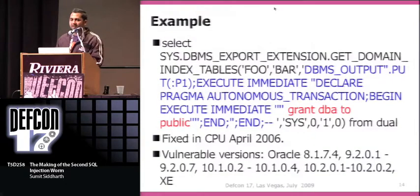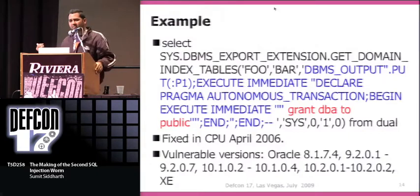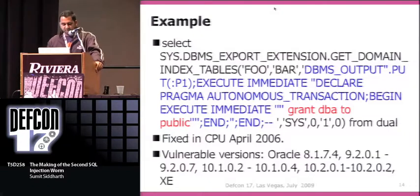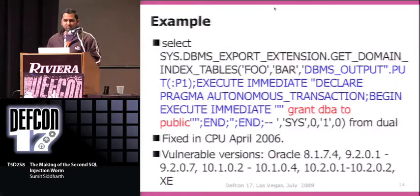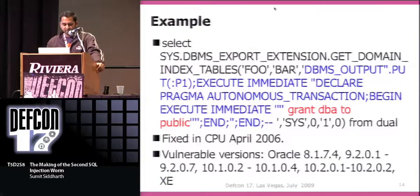This is a sample exploit reported by David Litchfield, also mentioned in his book Oracle Hacker's Handbook. The transaction is declared as autonomous transaction to make it independent. This particular injection was fixed in 2006. There is yet another PL/SQL injection in the same function reported by Alexander Kornbust, but I won't be discussing that here — maybe at the next DEF CON. These are the vulnerable versions that will be affected.